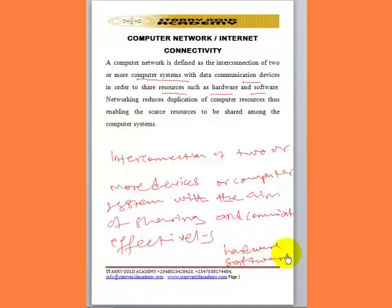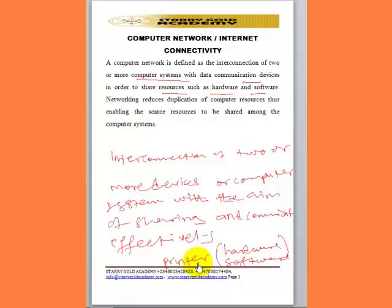For example, if we interconnect 20 computers, we don't need 20 printers — we only need one printer. What will happen is that we install a printer on one of the computers on the network, most advisably on the network server. Any time users are working on the network, even if all the computers are busy, only one printer can be used effectively by all users to print.